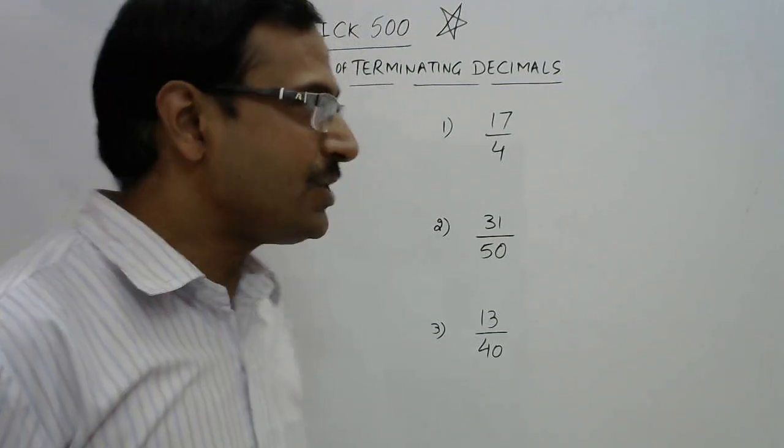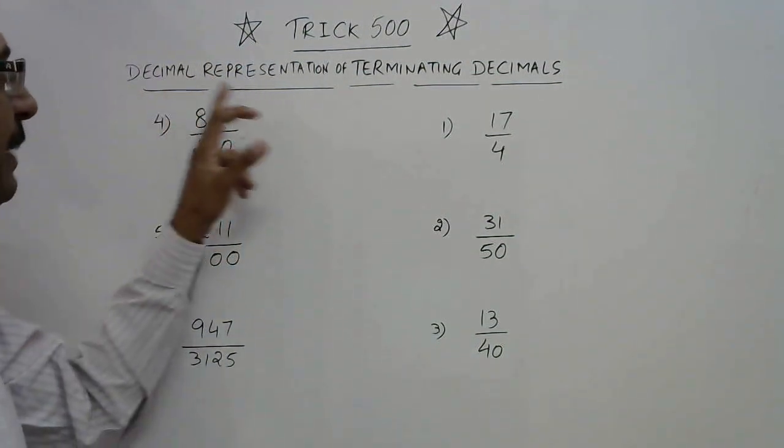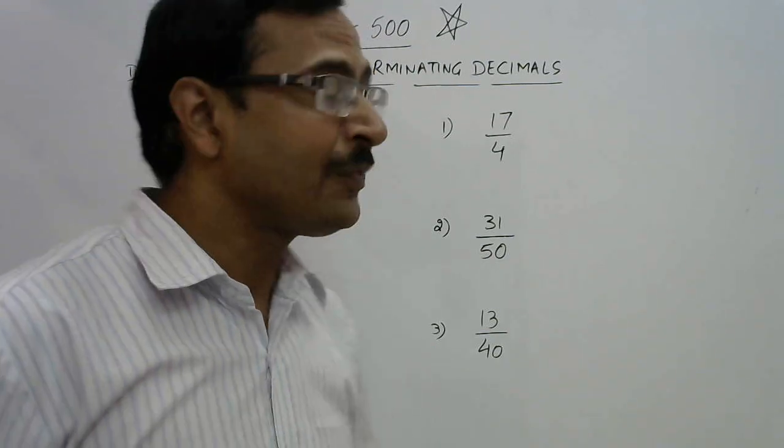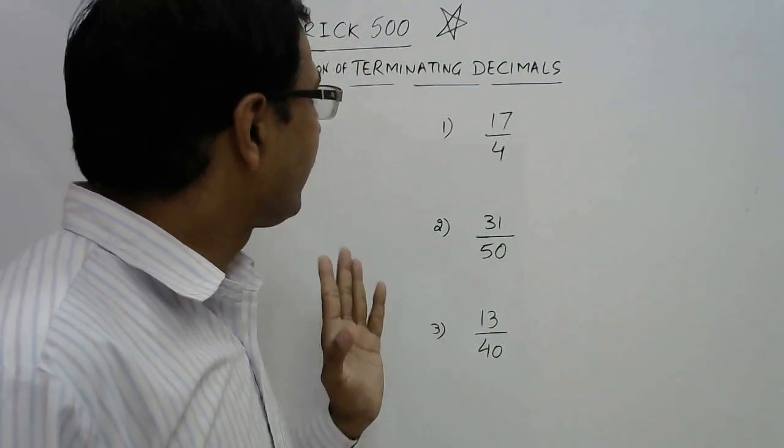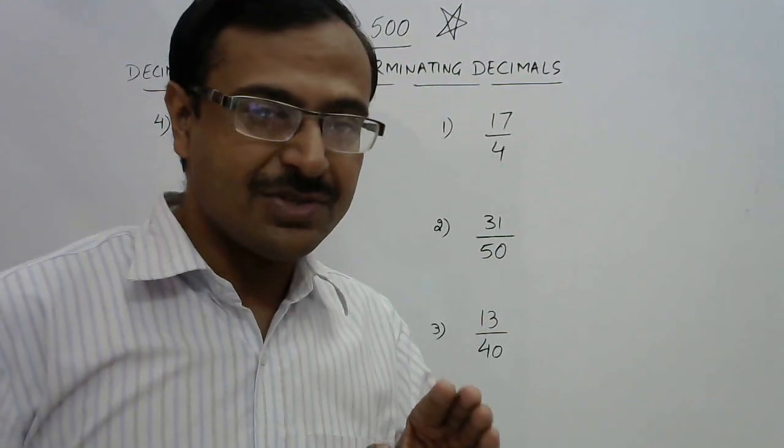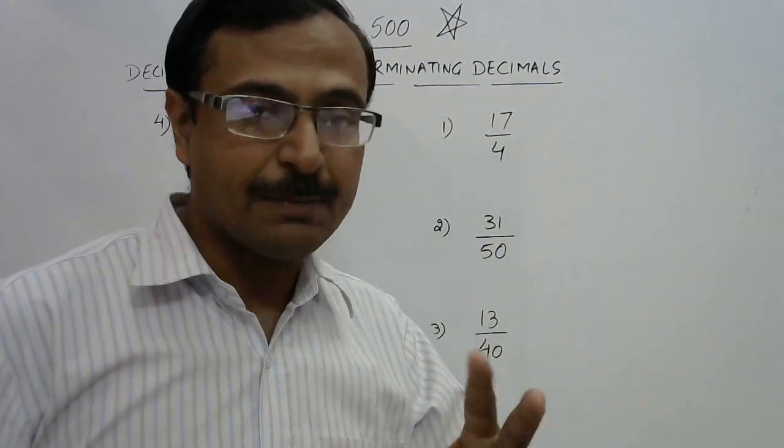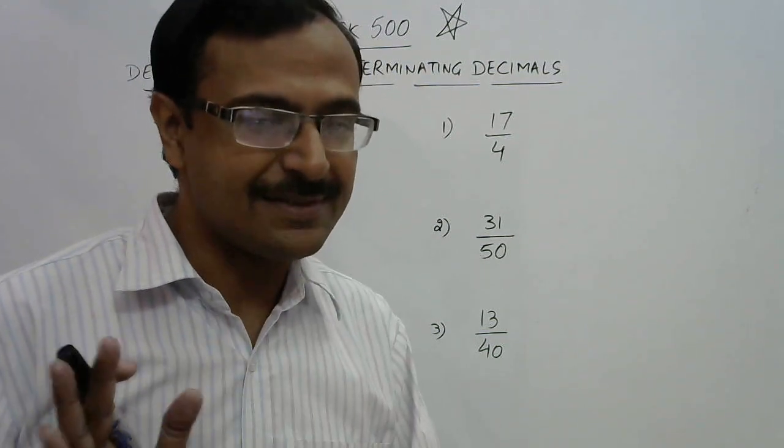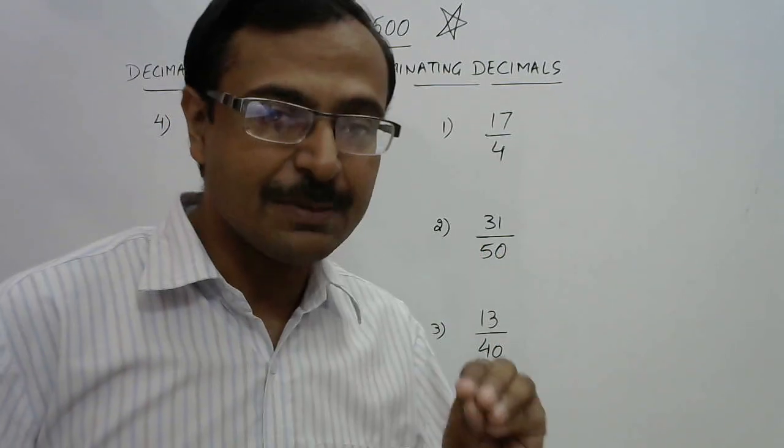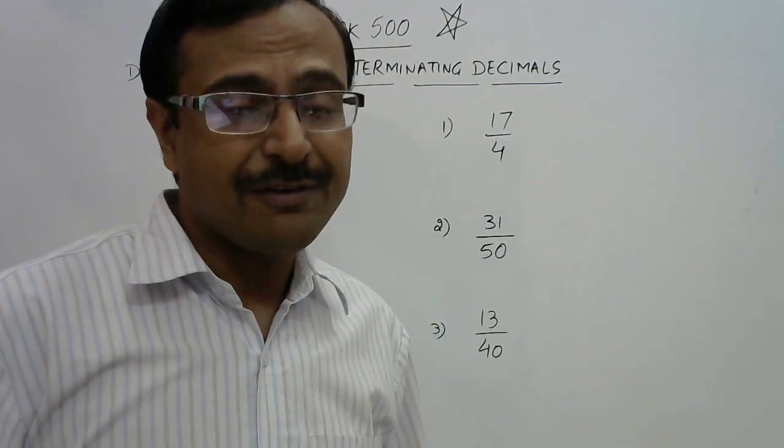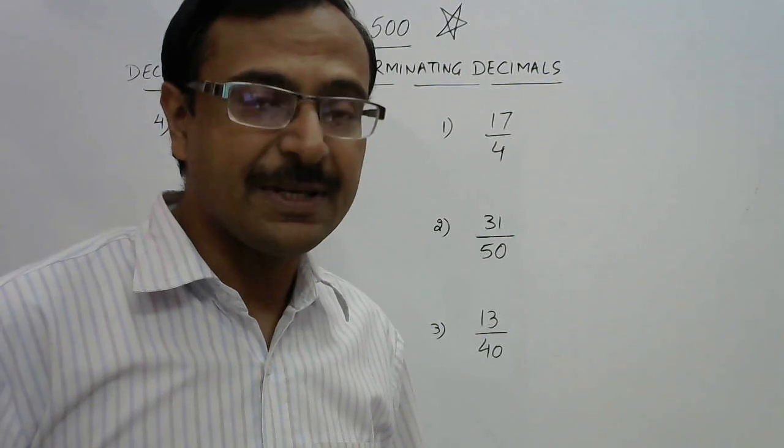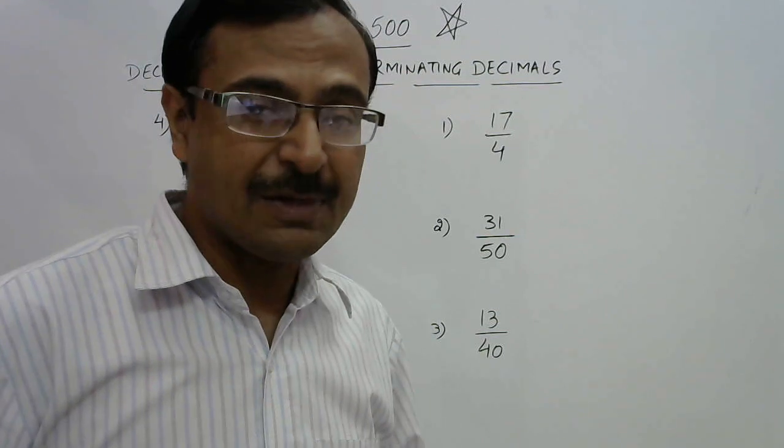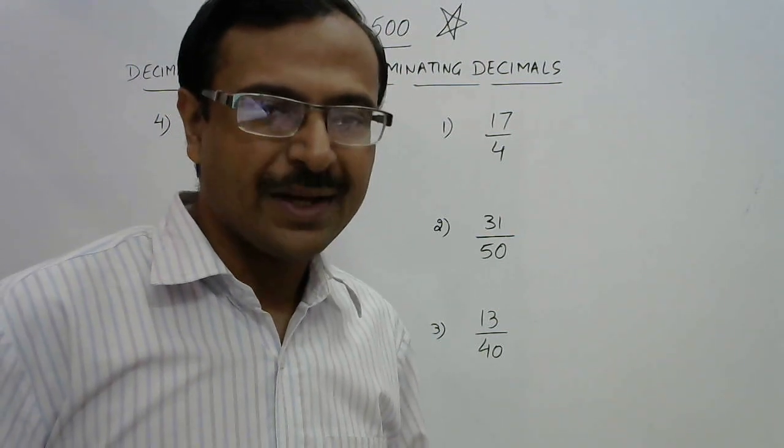So in this video I am going to deal with a method through which you can find out the decimal representation of terminating decimals. Now in trick number 499 I told you that we can identify without division whether a particular fraction has a terminating decimal or not. If the denominator contains only twos and fives, only then the decimal representation is terminating. So once we have found out that the decimal representation is terminating, we can convert this fraction into its decimal form without division.